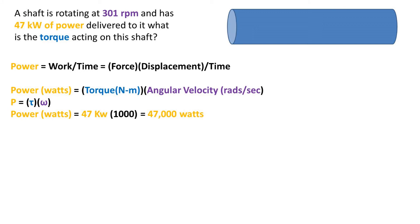Now to solve this problem, we need to convert all of our givens into the correct unit. So to get to watts, we must multiply kilowatts by 1000. We get 47,000 watts.